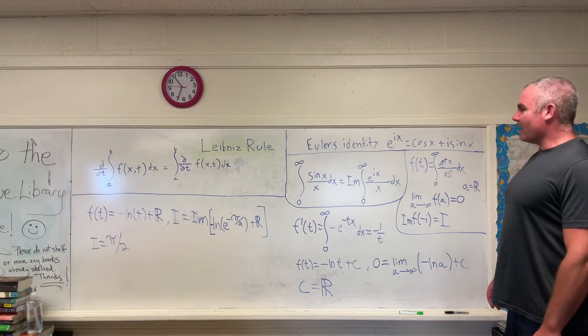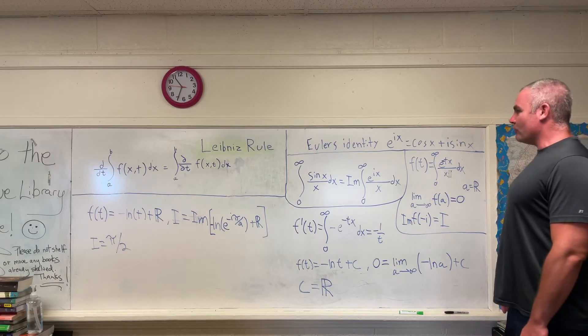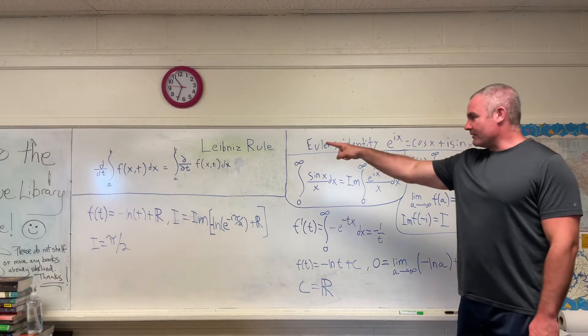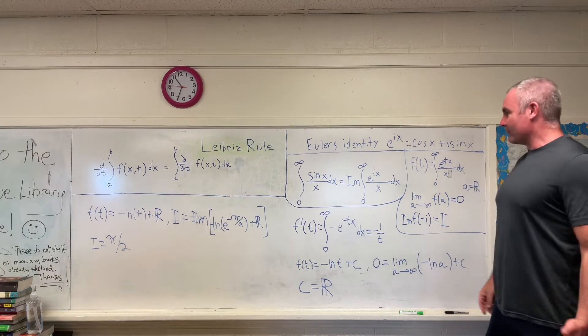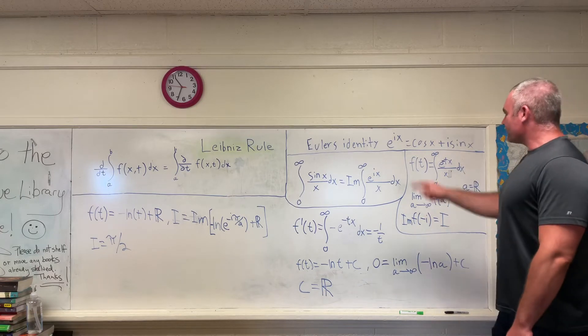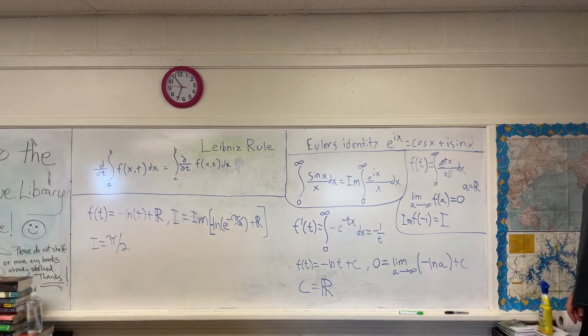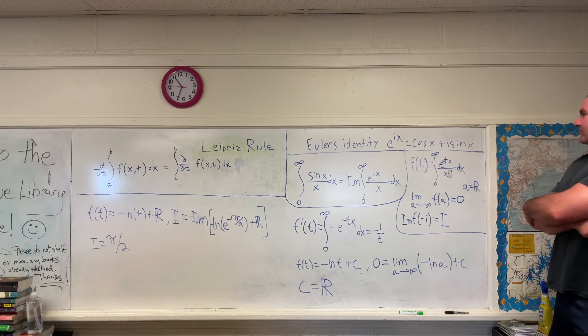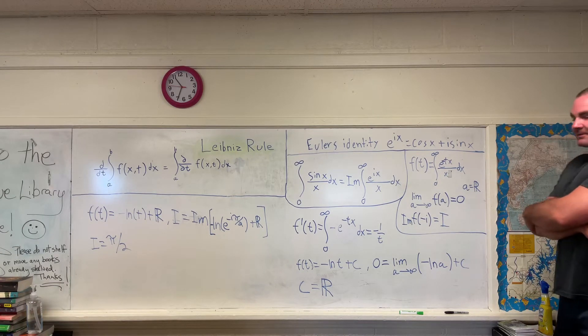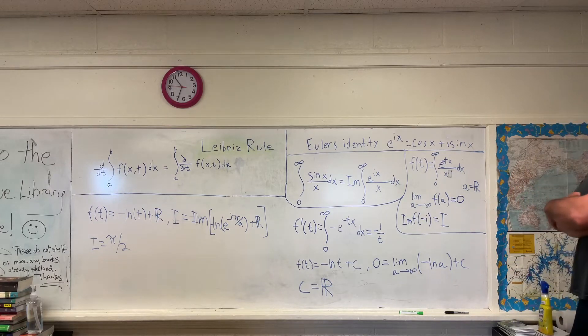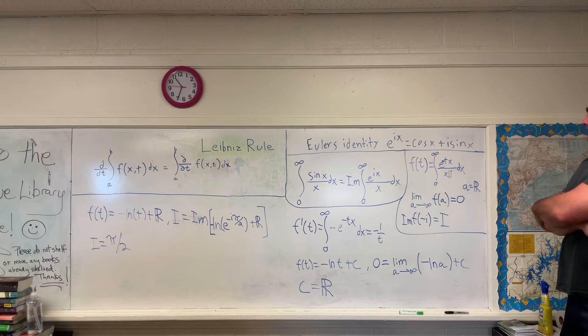But today we're going to be using two tools. Obviously we're going to be using the Leibniz rule which we've used every single time, but we're also going to be using Euler's identity in this one which states that e to the ix is equal to cosine x plus i sine x. I'm not going to prove why that's true. There's plenty of videos on that. Go ahead and watch them if you'd like.